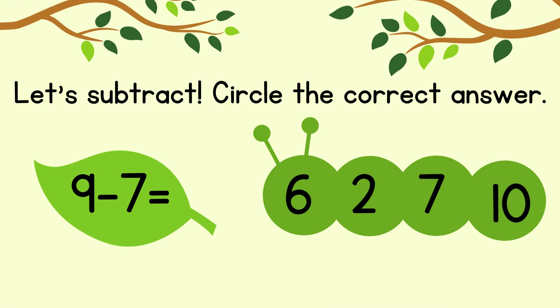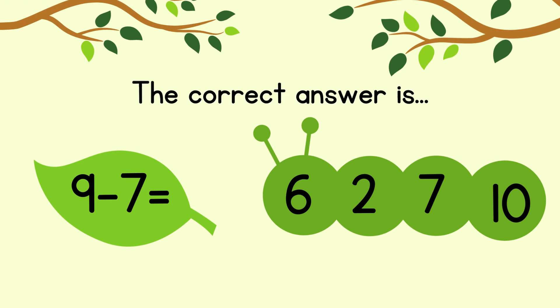Circle the correct answer. 9 minus 7 equals. The correct answer is 2.